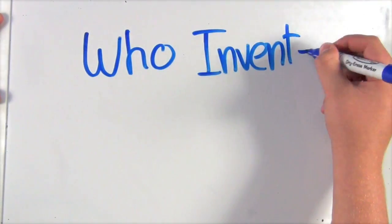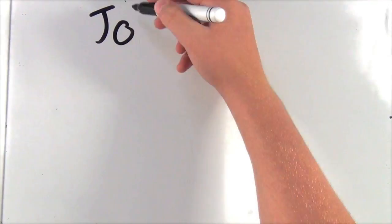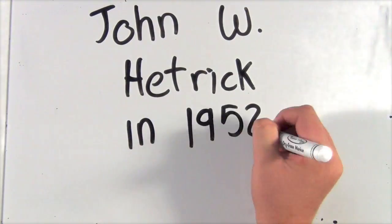So now, who invented this awesome idea of the airbag? It was a man by the name of John W. Hetrick in 1952.